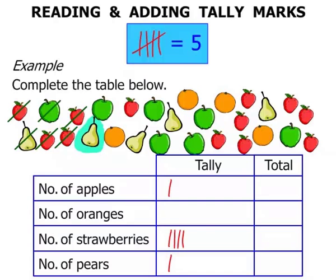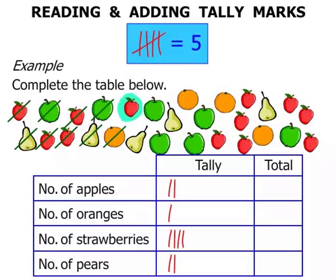Next one's a pear. Now we've got an apple. At last we've got our first orange. Now another strawberry — look very carefully at the strawberry row and we put the line across. So that was our fifth strawberry.